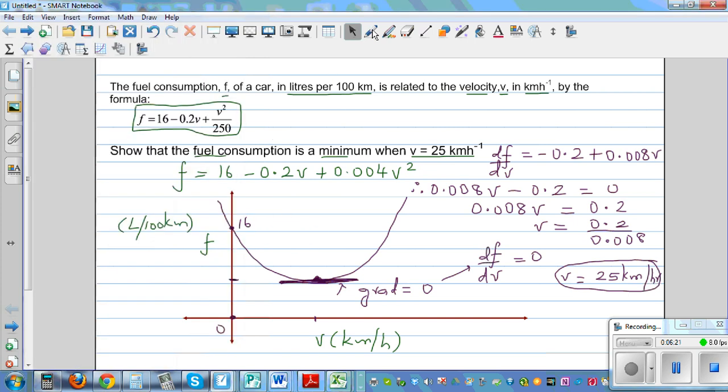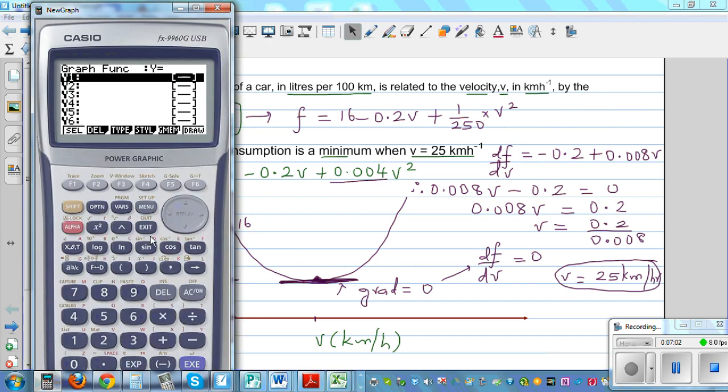Now before I type in, some of you may struggle. How did I get to 0.004? This is same as F equals 16 minus 0.2V, and this can be written as plus 1 over 250 times V². And 1 over 250, I know is 4 over 1000, and 4 over 1000 is 0.004. That's how I wrote 0.004.